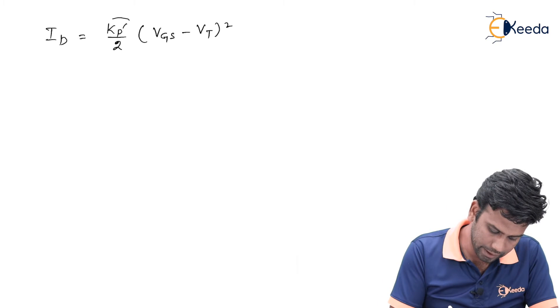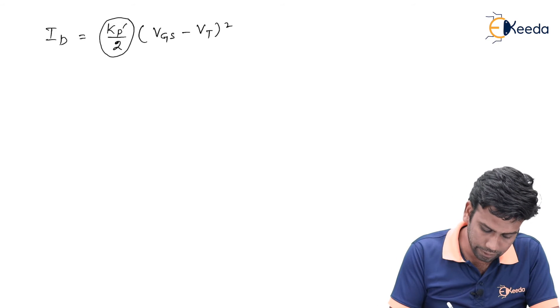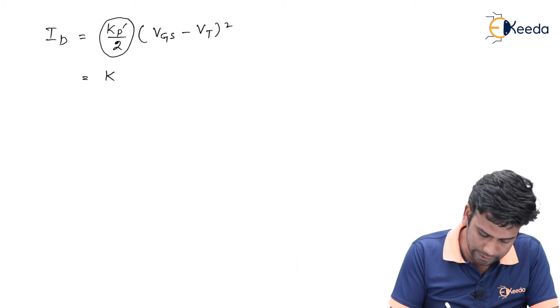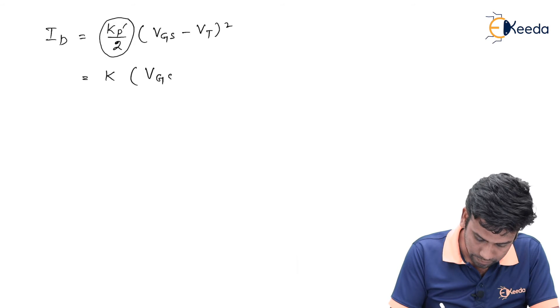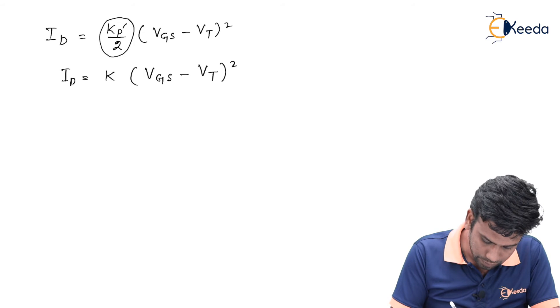We can see that K_P' divided by 2 is nothing but another constant, so we can replace this as K (VGS minus VT)² into ID.